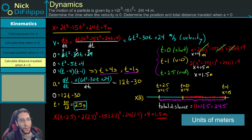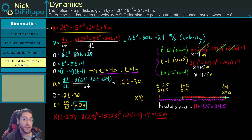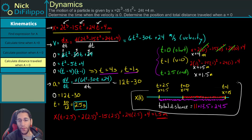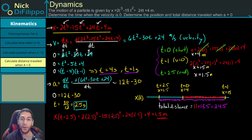Now you know how to work a problem when given an expression for position in terms of time, and you're asked to find the time that makes a certain parameter — such as velocity or acceleration — equal to zero. You also know how to find the total distance a particle has traveled.